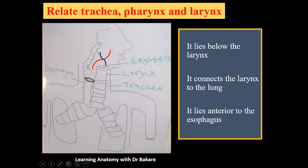The larynx presents a structure at its superior boundary called the epiglottis, which has the characteristic to flip down and backwards. Air inhaled through the nose enters the nasal cavity, goes into the nasopharynx, down into the oropharynx, and the epiglottis opens so that air can move through the larynx, down to the trachea, and then to the lungs.